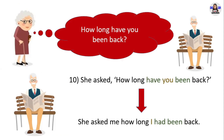Next example: 'How long have you been back?' She asked 'How long have you been back?' in direct speech. In reported speech, she asked me how long I had been back. 'Have been' in present perfect changes into 'had been' in past perfect. Pronoun 'you' changes into pronoun 'I.'